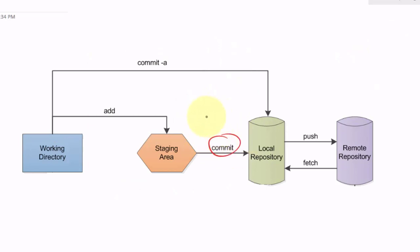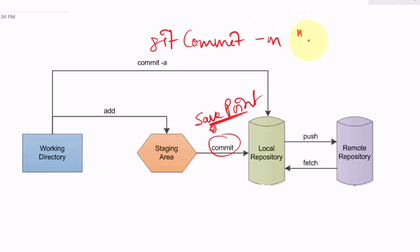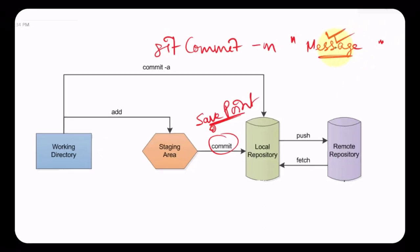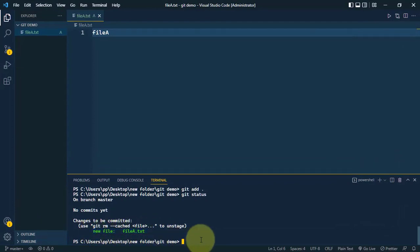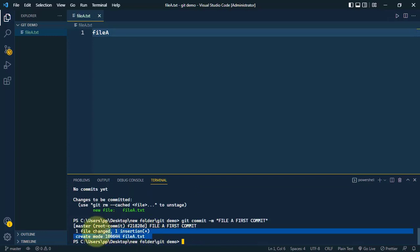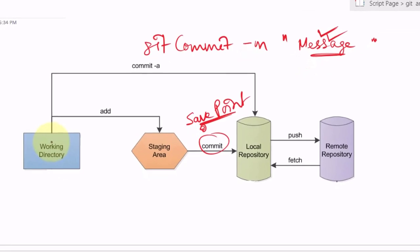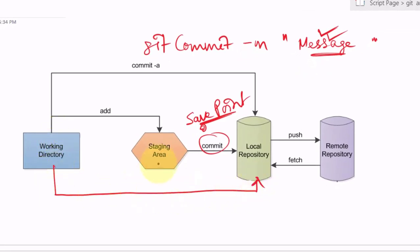A commit works as a save point — whenever we find any bugs in our project, we can go back to this save point. To commit, use the command git commit -m followed by a message. The message is very important and should be clear so we can see what changed and when. We should always add a message to every commit. We run git commit -m 'file-a first commit' and the file is successfully committed to the local repository.